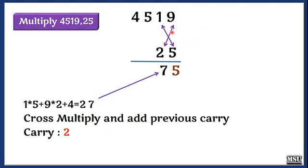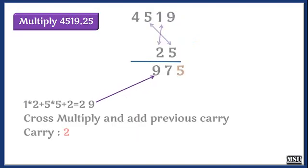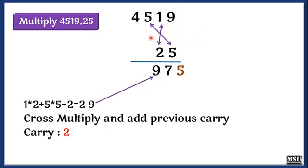Next step, we are going to leave this 9 and consider this 5 and 1, then this 2 and 5. We are going to perform cross multiplication. This 5 is cross multiplied with 5 and 2 into 1, then the previous carry is added. The result is 29.